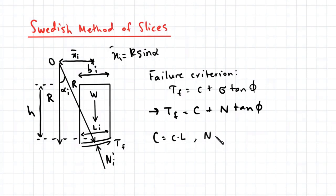Recall from our previous videos that capital C is equal to little c, the cohesion, multiplied by L. And N is equal to W cos alpha. For the slice, we approximate the arc at the base of a slice as being a straight line. So in this case, L is equal to B over cosine alpha. Also recall that W is equal to gamma multiplied by BH.